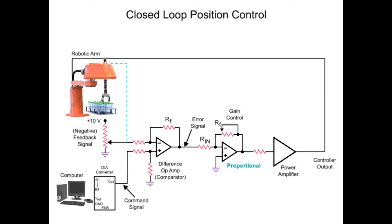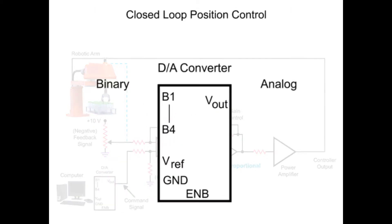To move the robotic arm to a specific position, a command signal from the computer starts the motion sequence. The analog command signal voltage produced by the digital-to-analog converter determines the position of the arm.